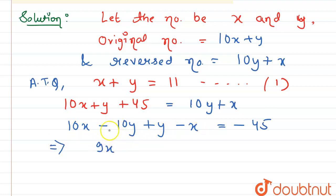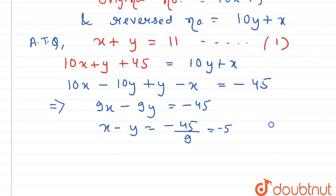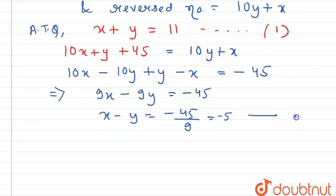Or 9x minus 9y equals minus 45. Or x minus y equals minus 45 by 9, or equals to minus 5. This equation is second. So now by solving equation 1 and 2, we get: